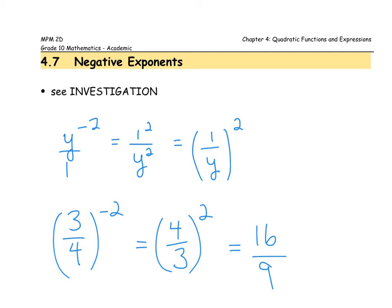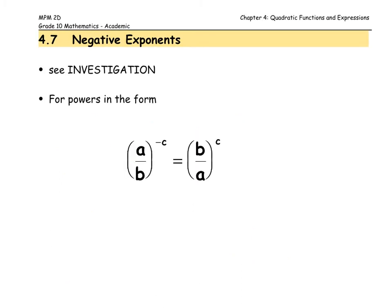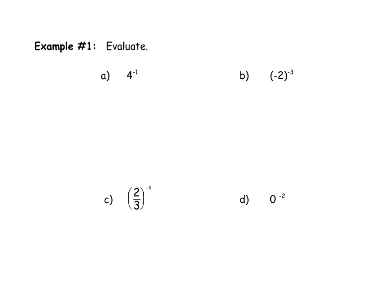In general, if we're looking at a power where we have a fraction as the base — and this extends to whole numbers because whole numbers can be written as fractions over one — and it's raised to a negative exponent, we can make that exponent positive and evaluate it by simply taking the reciprocal of the base. Let's try a few examples; try each one and then check your answers with mine.